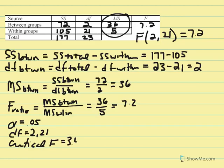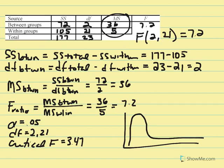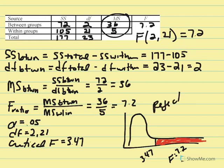Critical F is 3.47. Visually, looking at the positively skewed F distribution — if the ratio equals 1, variability of the numerator equals variability of the denominator. Here our critical F is 3.47 and our F statistic is 7.2. The critical F establishes the critical region, and since our F statistic falls in that region, we reject the null. Students do perceive these teachers differently in terms of their acceptance of cheating behavior — at least one type of teacher is seen as being different compared to the other groups.